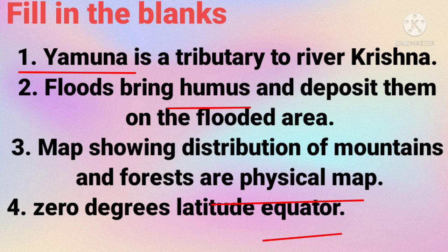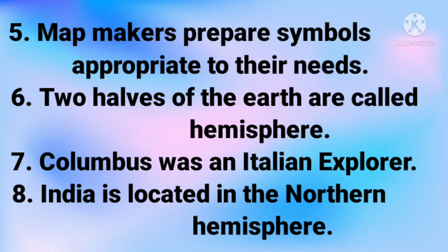Now next, the fifth one is: Map makers prepare symbols appropriate to their needs. Two halves of the earth are called hemispheres.